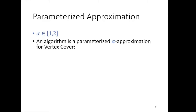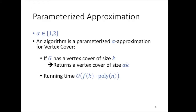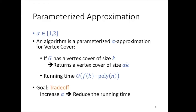We're going to focus on parameterized approximation. Given an alpha between 1 and 2, we say an algorithm is a parameterized alpha-approximation for vertex cover if, given a graph G which has a cover of size k, the algorithm returns a vertex cover of size alpha*k or less, and we require the running time to be FPT. Because vertex cover is already in FPT, the real goal is to obtain a trade-off: we want to reduce the running time as we increase the approximation ratio.